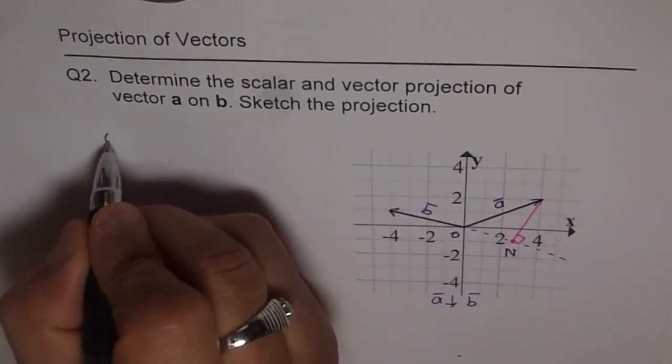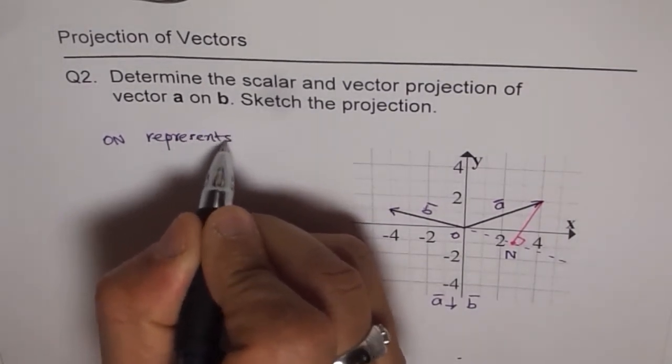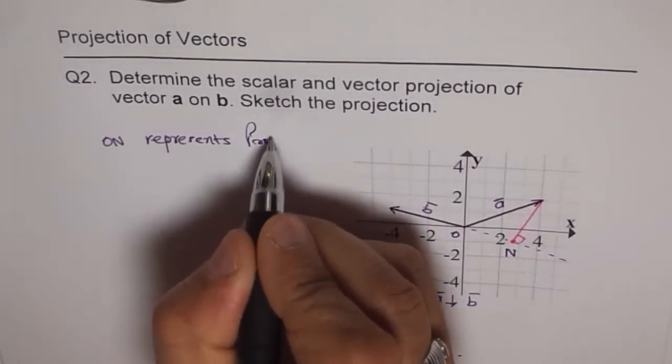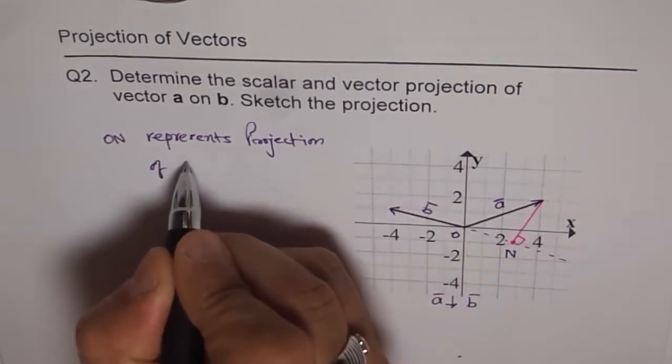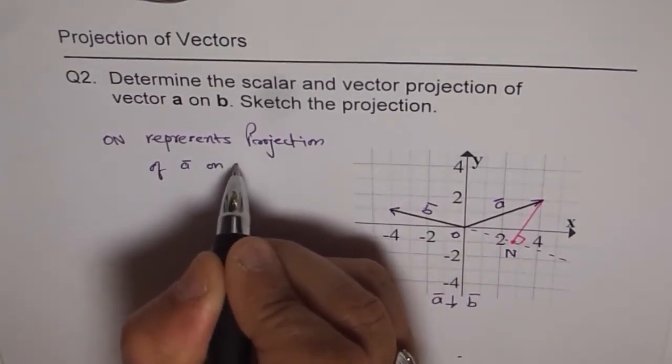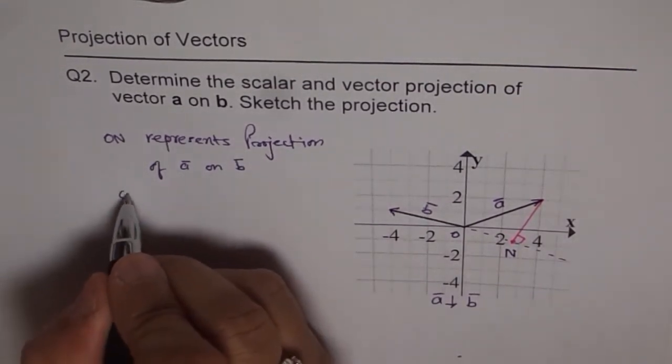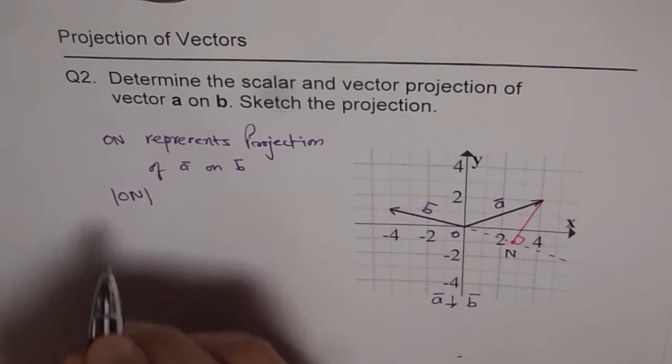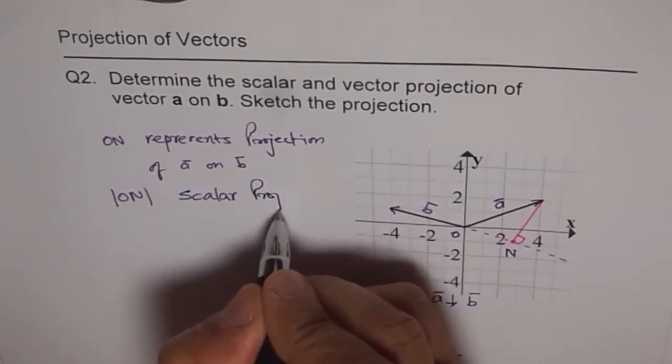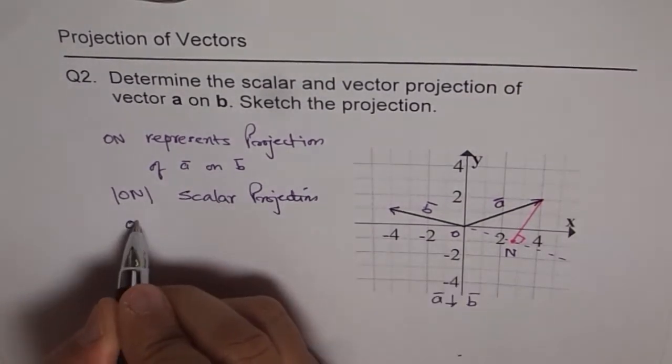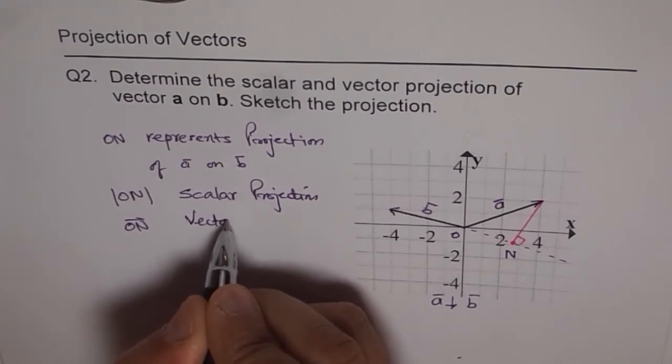So ON represents projection of vector A on vector B. Now, if I write ON as this, it becomes scalar projection. And if I write ON as this, it becomes vector projection.